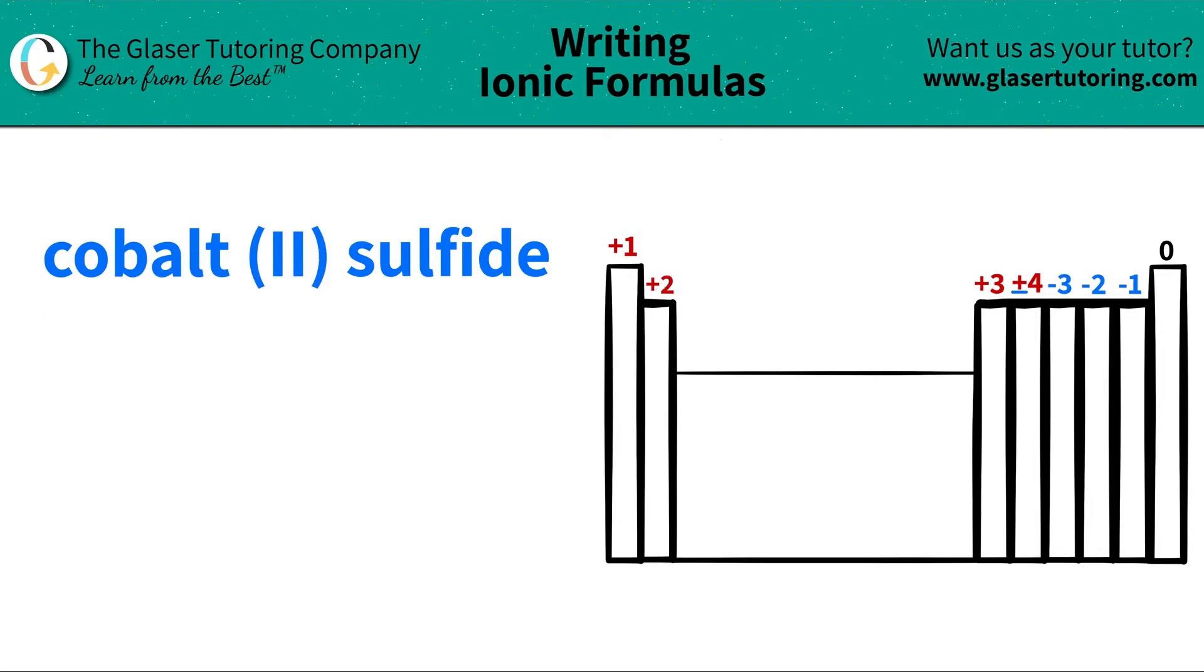Cobalt, if I scan the periodic table, cobalt is going to be over here. It's a metal, right? It's listed as Co and it's part of this block which means that it's a transition metal. So I'm going to write Co.